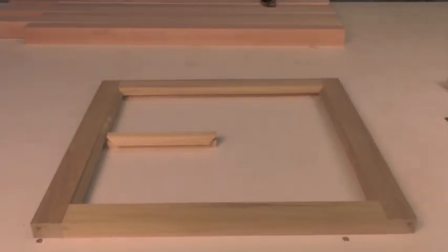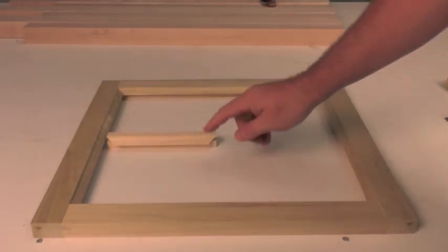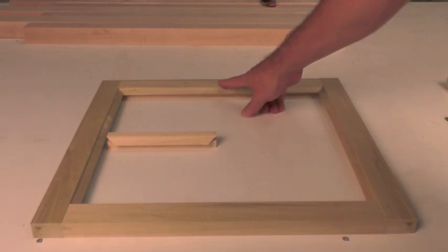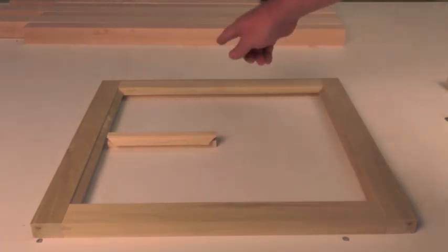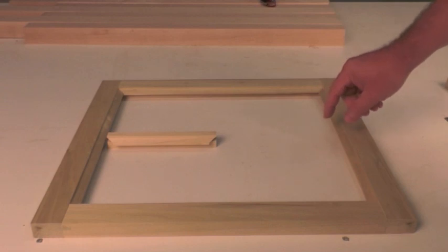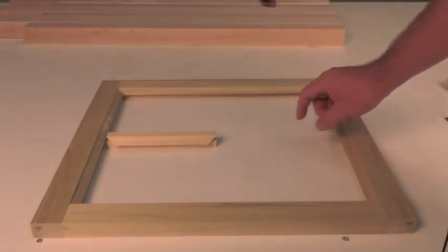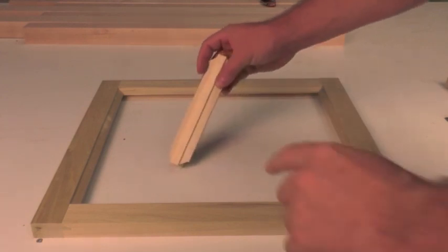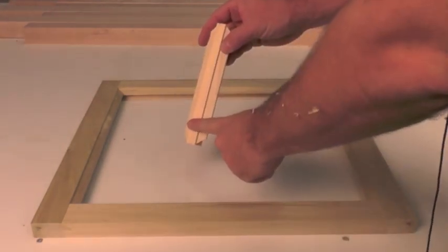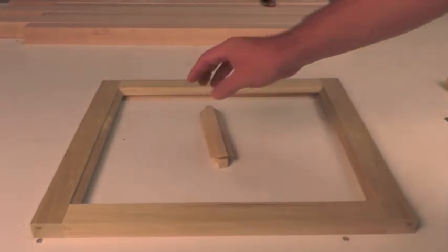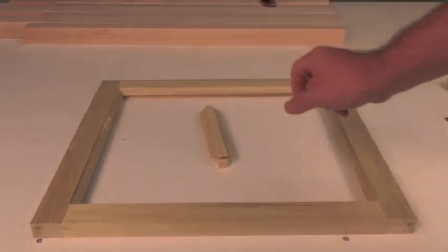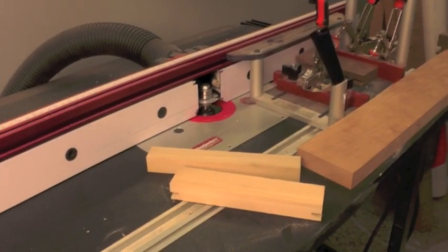The next step on our divided light doors is to determine the length of the dividers or muntins. What we want to do is measure the distance between the rails to give us our vertical muntin and then to measure the distance between our two styles and subtract the flat on the profile to give us the distance on our two horizontal muntins.